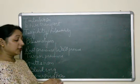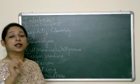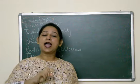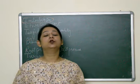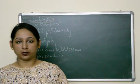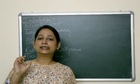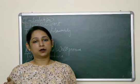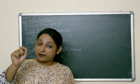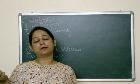Now the first definition is imbibition. It is the process in which the living as well as dead plant cells — we have to specify dead plant cells — they absorb water. The process by which living as well as dead plant cells absorb water.